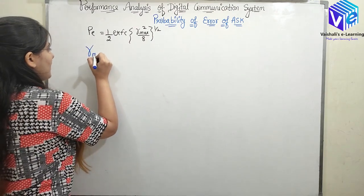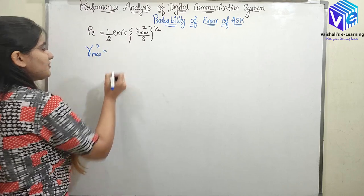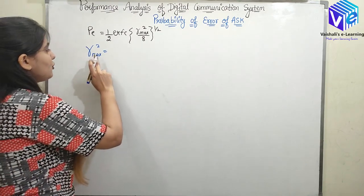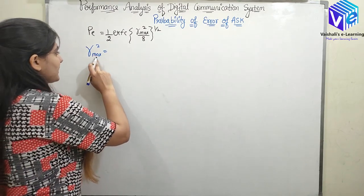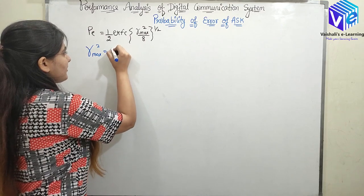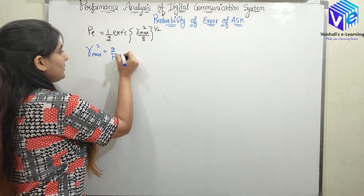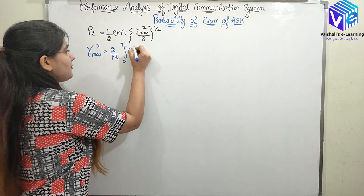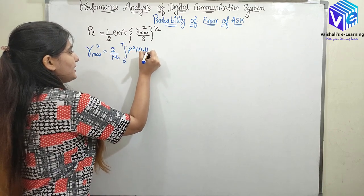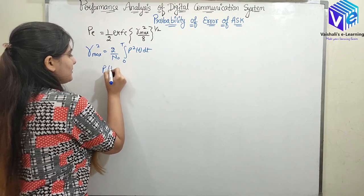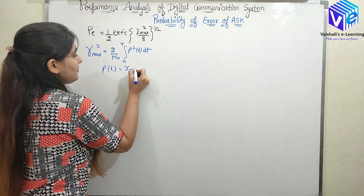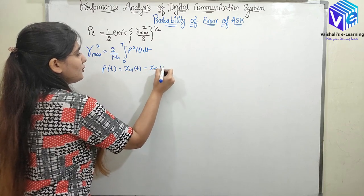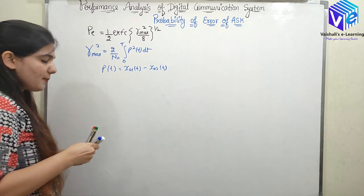I told you the value of gamma_max² in my previous video where I discussed the matched filter. The gamma_max² value, or the maximum SNR, was given by (2/N₀) × integral from 0 to T of p²(t) dt, where p(t) = x₀₁(t) − x₀₂(t).